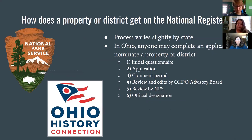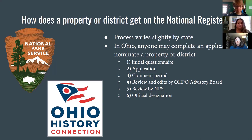The process to get on the National Register varies by state. In Ohio, anybody can complete an application to nominate a property or district. There's an initial questionnaire, an application, a comment period, review and edits by the Ohio Historic Preservation Office advisory board, and then review by the National Park Service and an official designation. This is a very intensive project — the application requires a lot of information and it does take time. It's not a quick process.